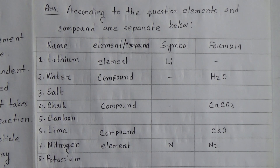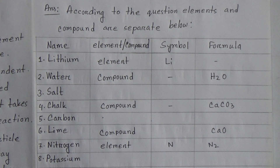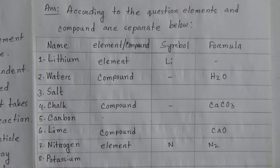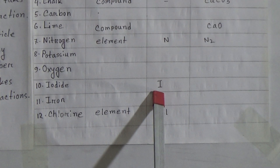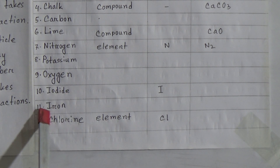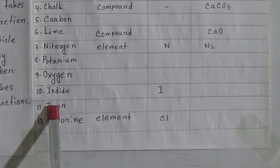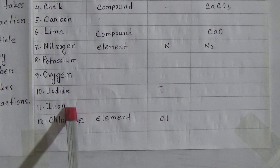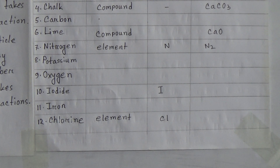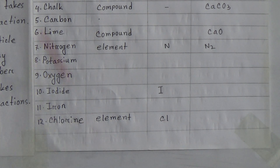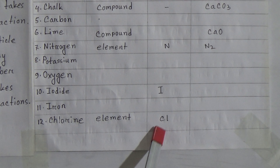I have shown you how to write these answers. Number 9 is oxygen — you will write this answer also by yourself. Number 10 is iodine. Iodine is also an element and the symbol of iodine is I. Number 11 is iron — I didn't write the answer here; you will find the iron symbol in your book. Number 12 is chlorine. Chlorine is also an element and the symbol of chlorine is Cl.